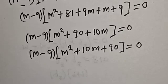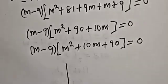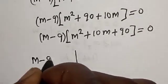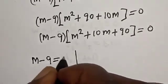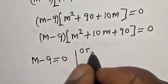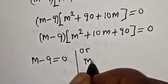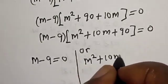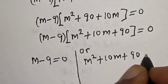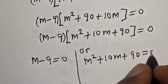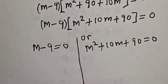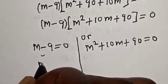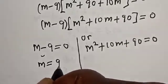Now there are two cases. The first case is m minus 9 is equal to 0, or the second case, m² plus 10m plus 90 is equal to 0. Let's work with the first case. From here, m is equal to 9.